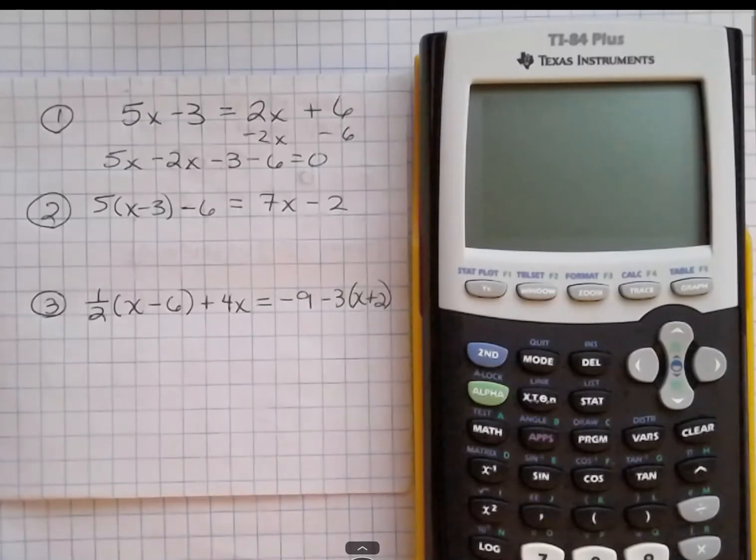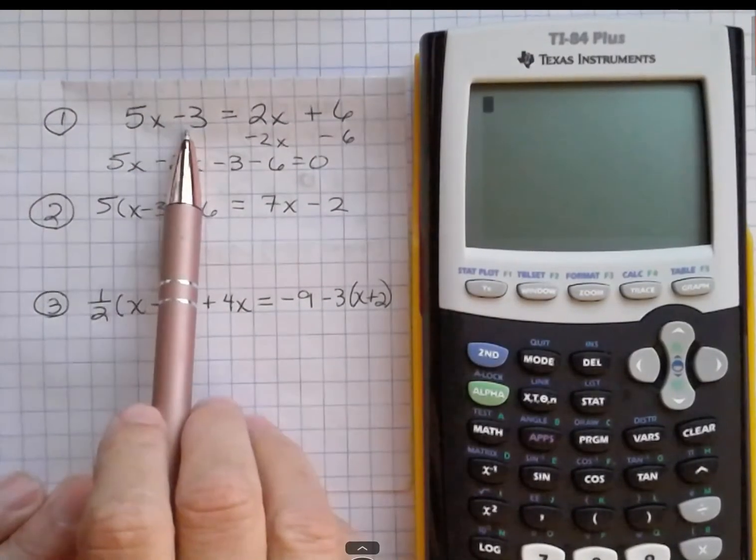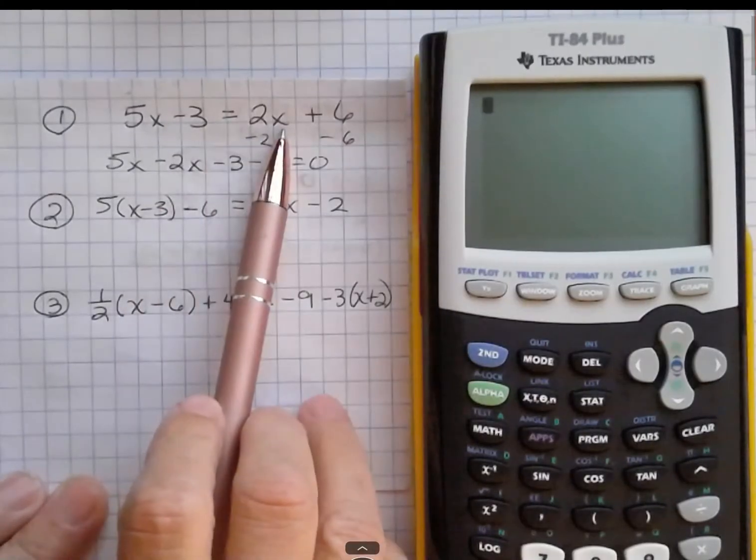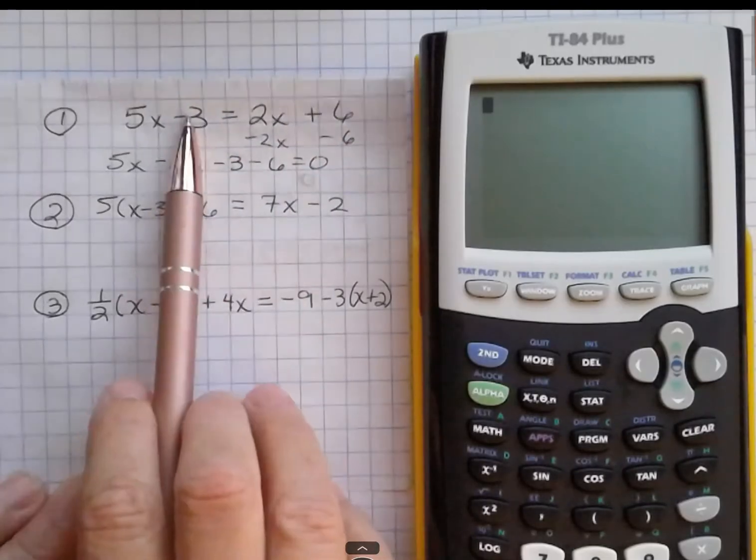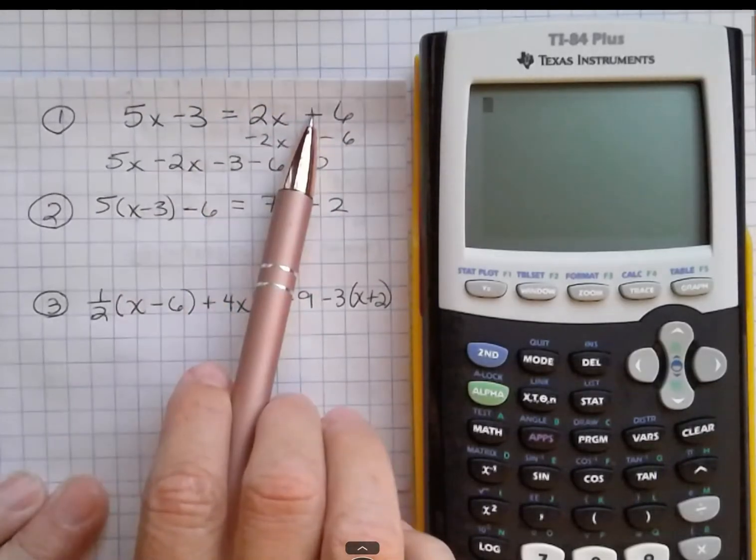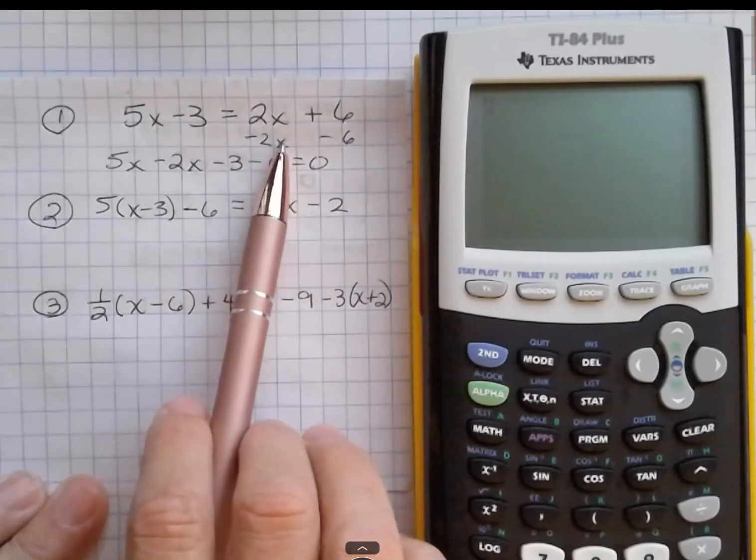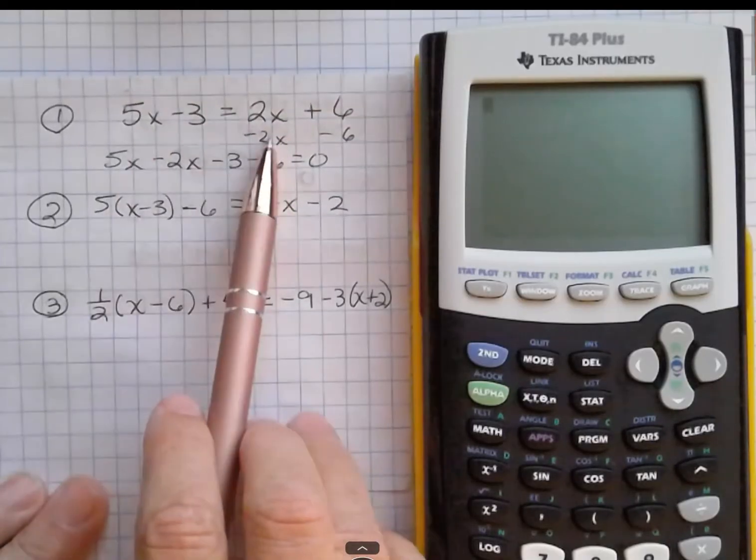So the first equation I'm looking at here is 5x minus 3 equals 2x plus 6, and so we have information on both sides of the equation, so what I want to do is move the terms from one side to the other side.